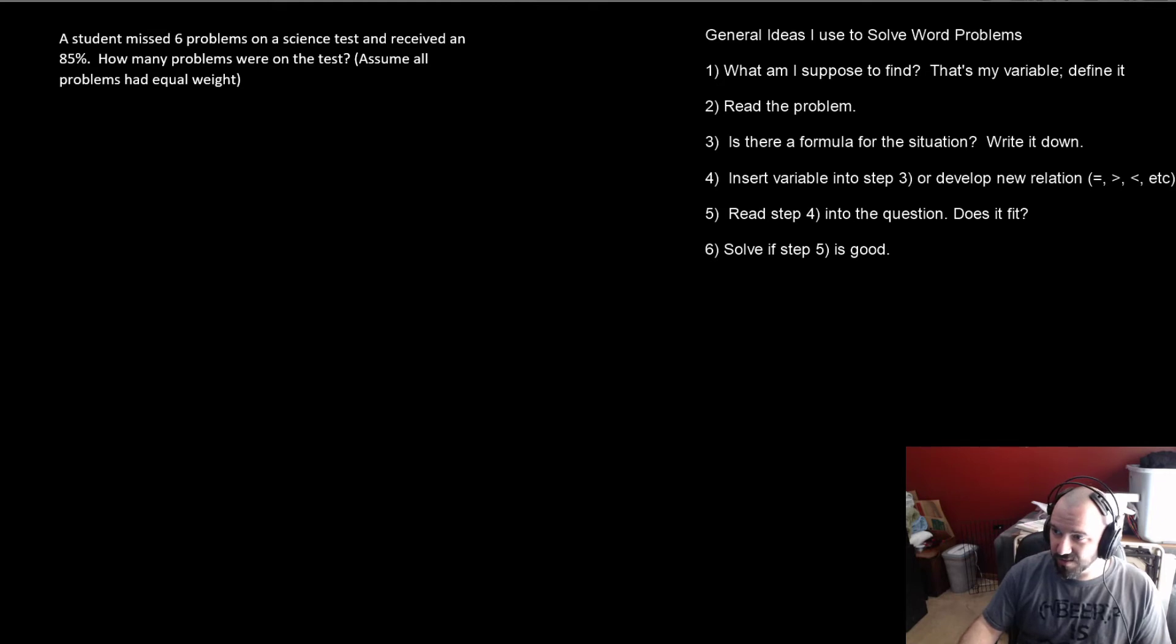I love these. They can be done in so many different ways. A student missed six problems on a science test and received an 85%. How many problems were on the test? Assume that all problems had the same weight. If they didn't, we don't know because if you missed six of the really heavy problems, then you're getting a different score than if you missed six of the light problems.